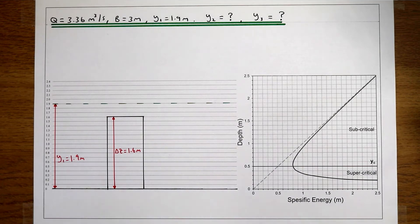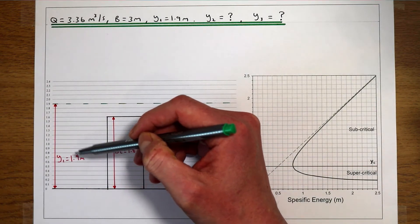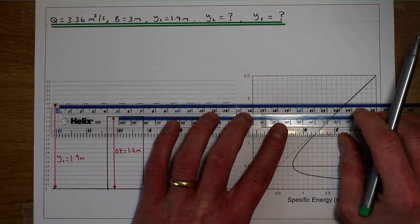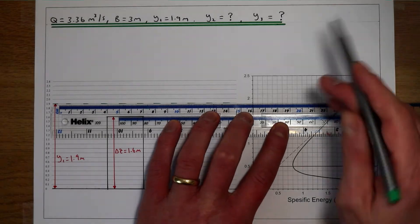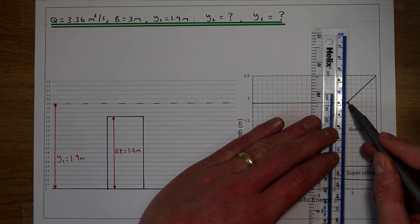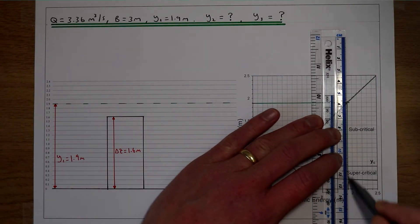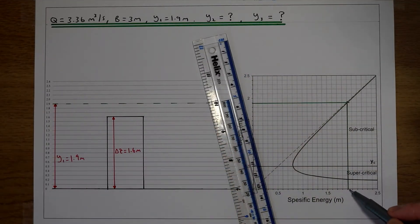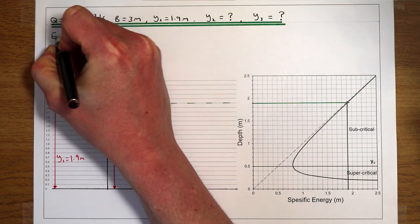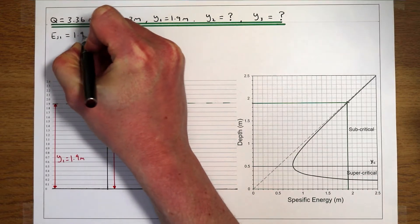The starting point, as always, is to work out what our initial level of specific energy is. Our initial flow depth is 1.9 metres. If we follow that across and plot it onto the graph, drawing a line from our flow depth of 1.9 metres, we look for the point where that intersects the profile and draw a line down. We can see that our specific energy level is just above 1.9 metres, so specific energy at point 1 is 1.9 metres.